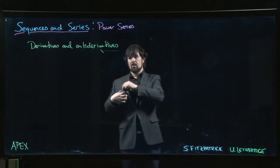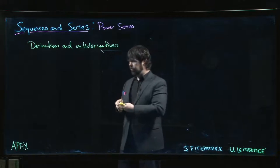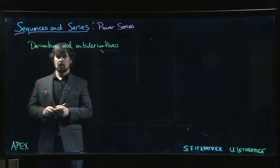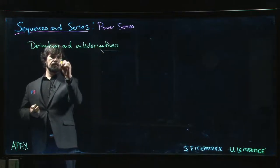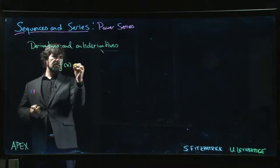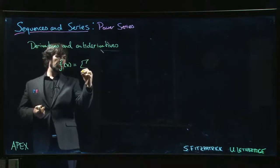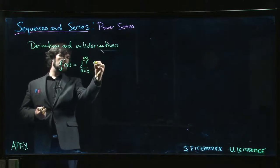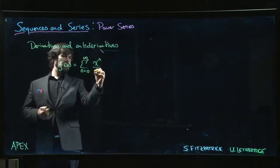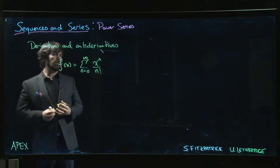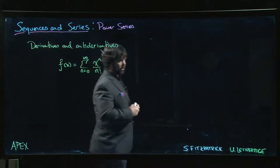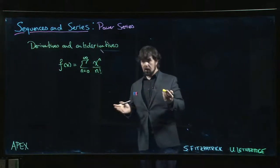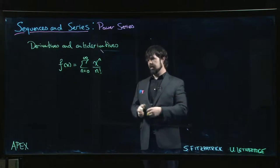All right, so we're going to end this section with one more example. The function that we're going to look at this time is f(x) = sum from n=0 to infinity of x^n over n factorial. We want to try and figure out what this function might be.